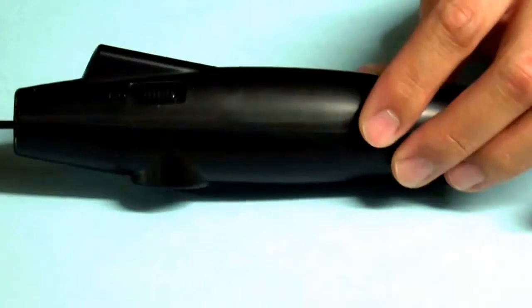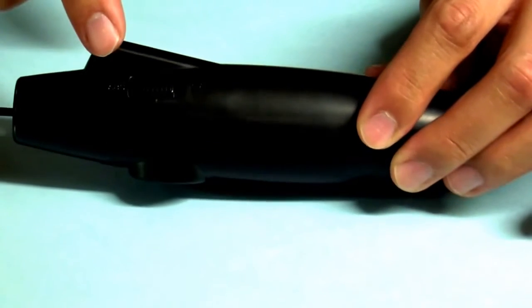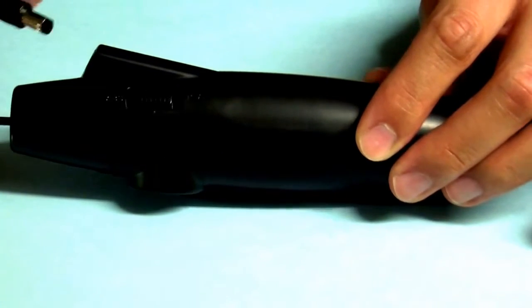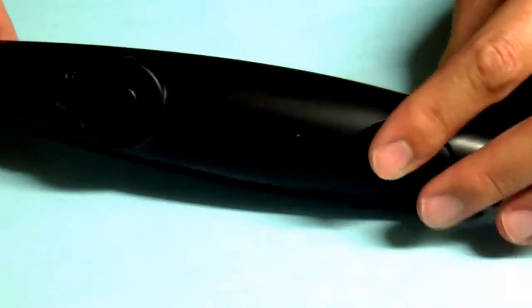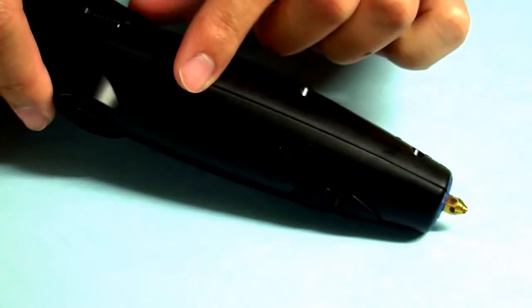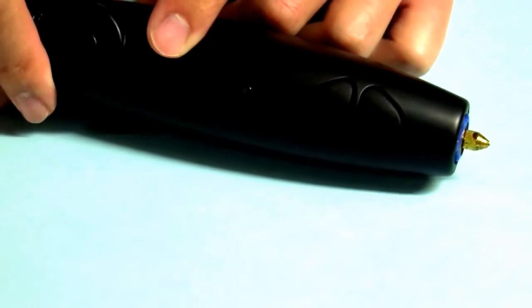You have two control switches, one for fast extrusion and one for slow extrusion. As you can see, the device has a built-in fan that also helps cool the plastic as you're pushing it out of the pen.